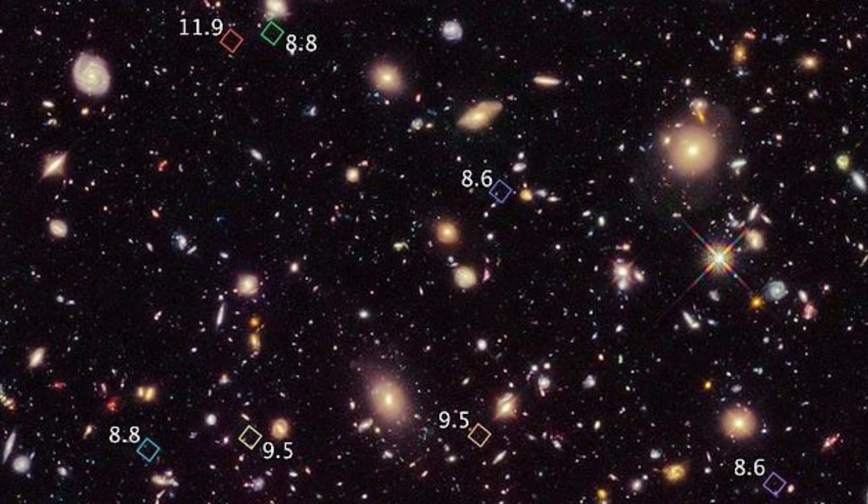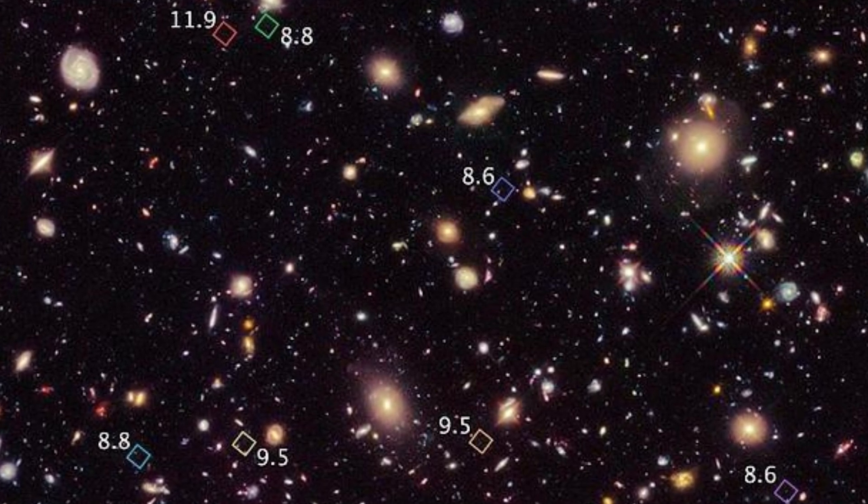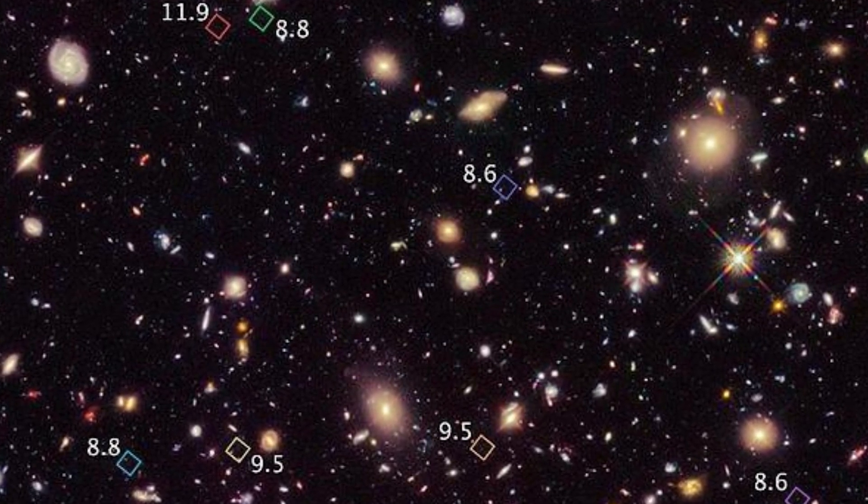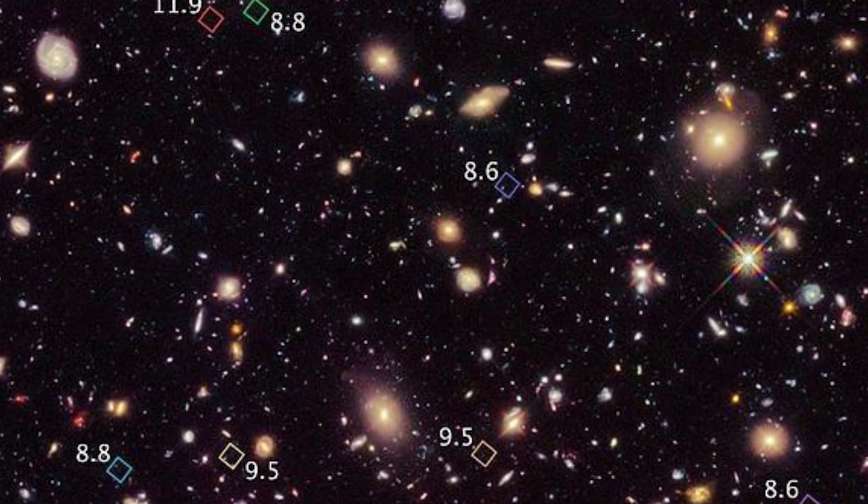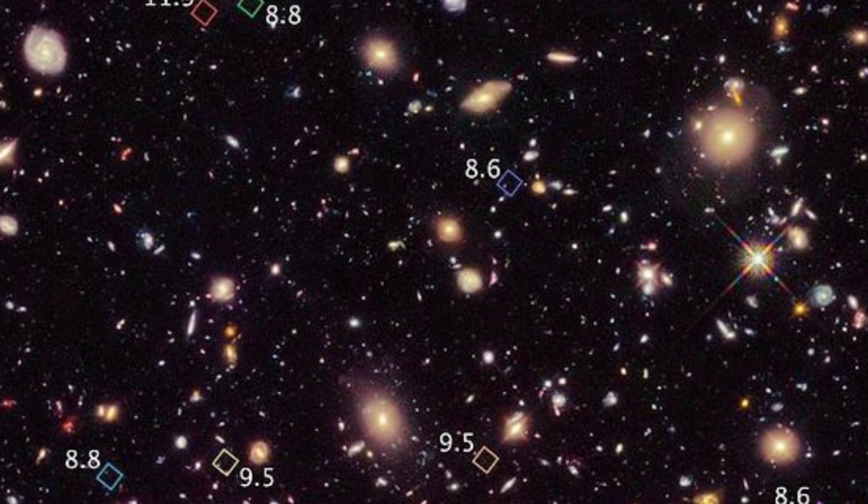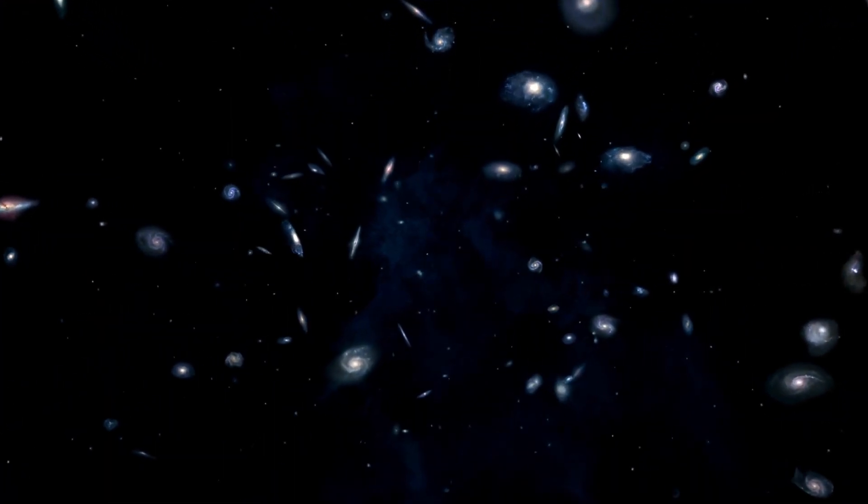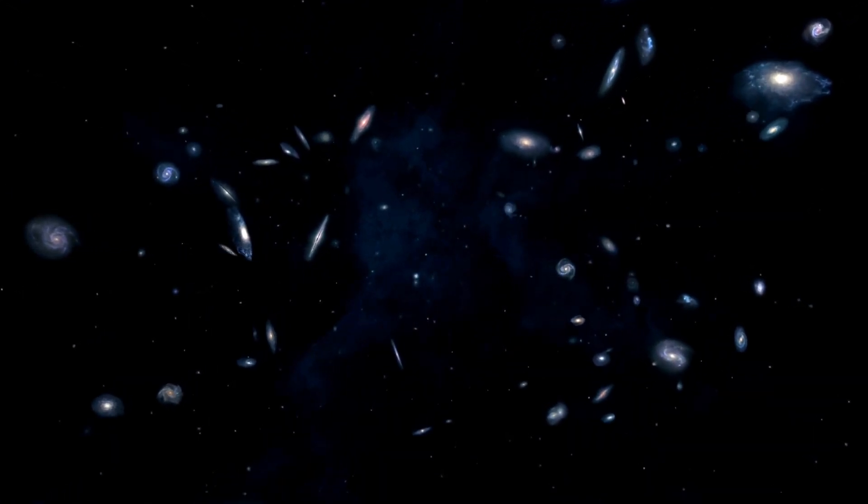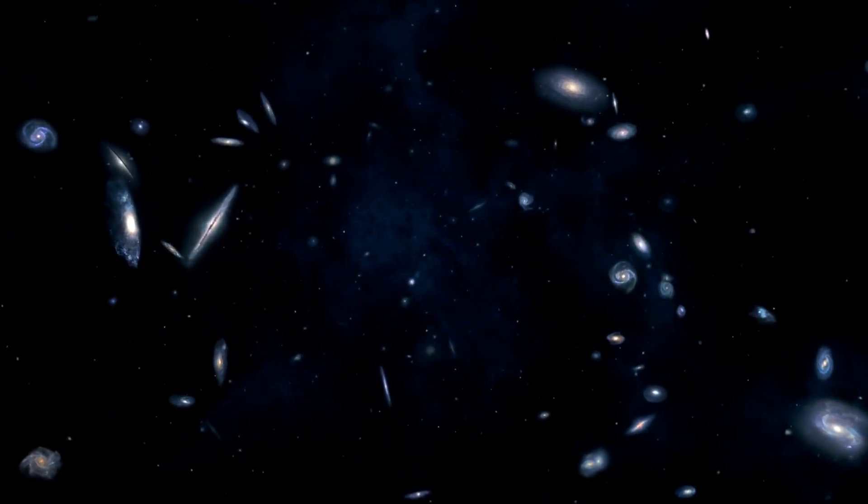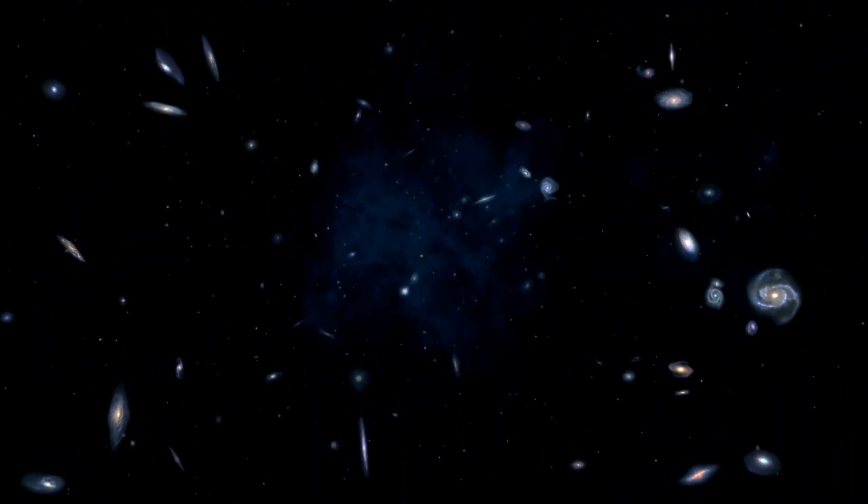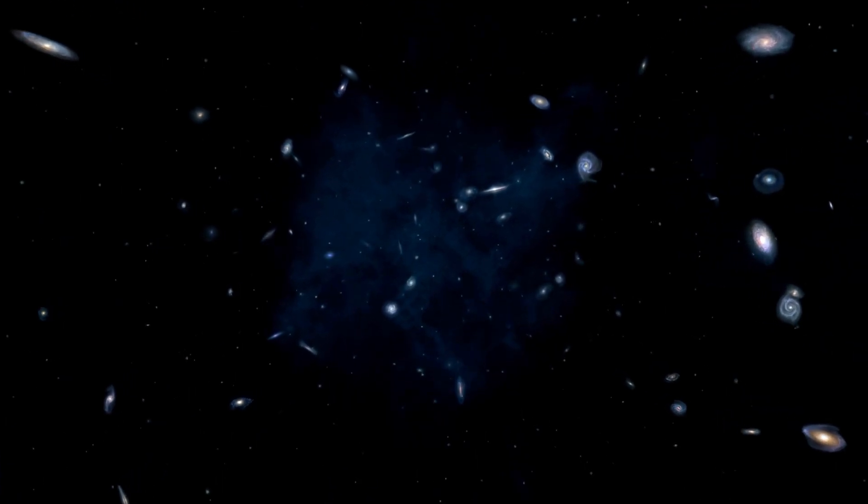The fact that the observed galaxies are two to three times smaller than similar galaxies imaged by the Hubble Space Telescope completely defies the expected behavior in an expanding universe. According to the hypothesis, as the universe expands, objects should appear larger as distance increases. However, these James Webb observations show galaxies that defy that expectation.